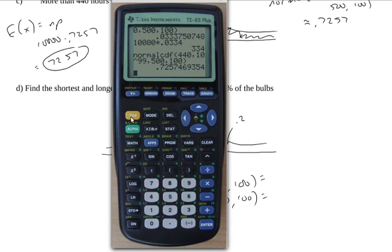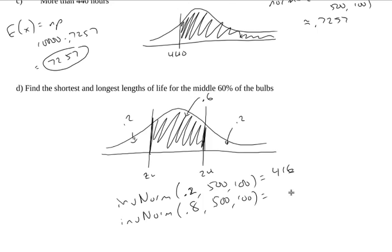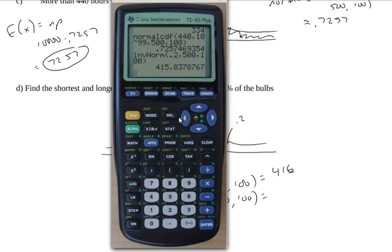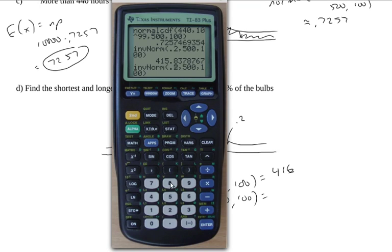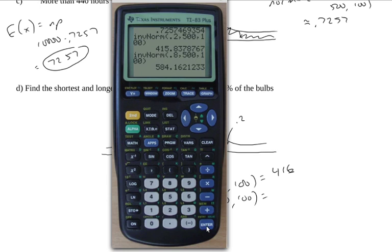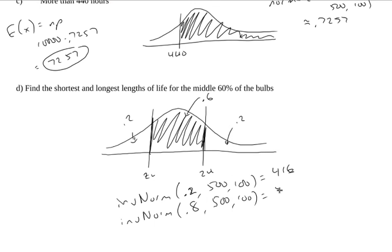Oops, I want inverse norm. So I'll go 0.2, 500, 100. That's 415, I'll call it 416 hours. And then if I want to do the upper cutoff, this one instead of being a 0.2 will be a 0.8. I'm going to get 584. So the middle 60% of the bulbs last between 416 and 584 hours.